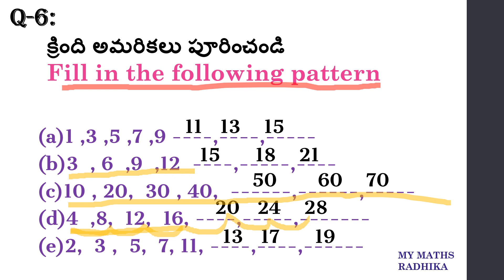Prime numbers: 2, 3, 5, 7, 11. Even prime numbers. 12 is in the 1 table, 2 table, 3 table, 4 table — it's a composite number. Next prime number after 11 is 13, then 17, then 19.